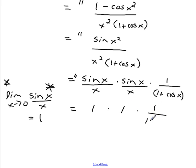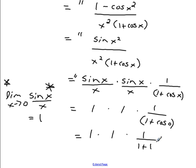All we have to do is plug in our limit, which is zero, to see what it gives us: 1 over 1 plus cos of zero. What is cos of zero? On the unit circle, cos is the x-coordinate and sine is the y-coordinate. The cos of zero is simply one. So 1 over 1 plus 1 equals 1 over 2, and you are done.